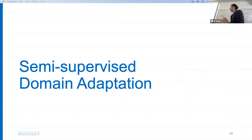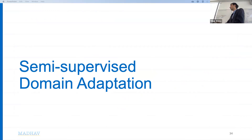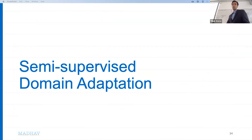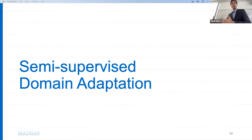Until now we have not used the unlabeled data available at the target domain. We have only used the little labeled data. But can we also leverage the abundance of unlabeled data at the target domain?